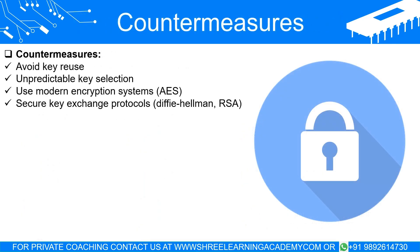Countermeasures: strengthening encryption. To protect against these types of attacks, encryption systems need to avoid reusing keys and implement unpredictable key selection methods. Modern encryption systems like Advanced Encryption Standard (AES) provide robust security measures that are resistant to such attacks. Secure protocols for key exchange, like Diffie-Hellman or RSA, make the prediction or discovery of keys extremely difficult for attackers.